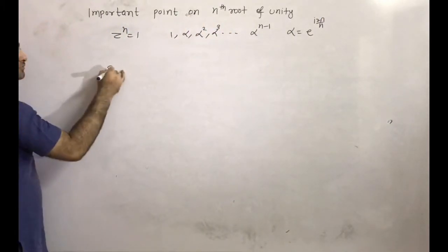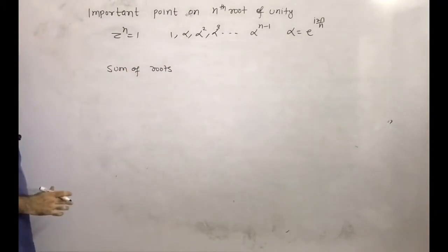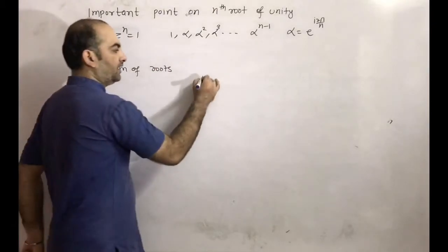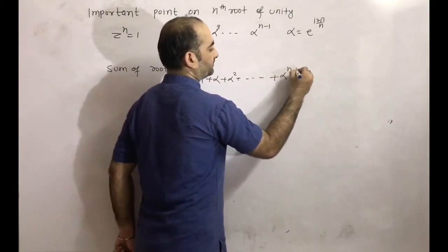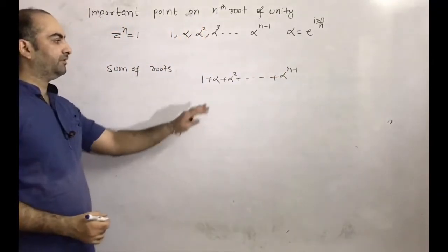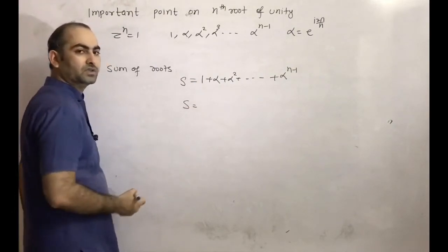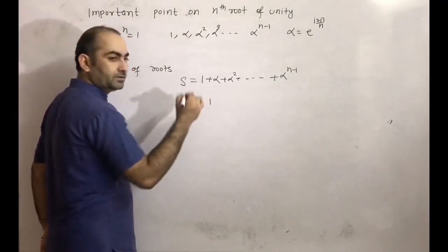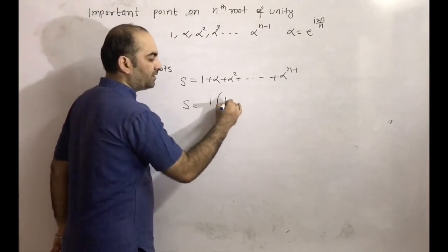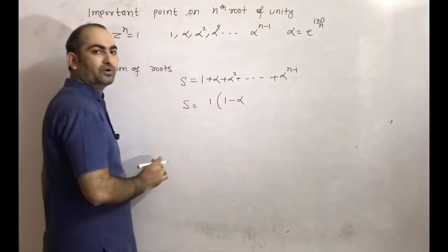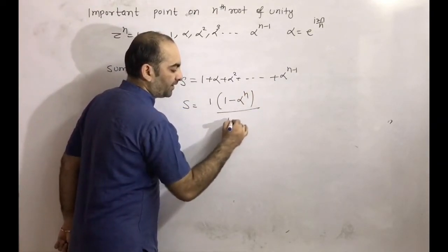Now for finding the sum of roots, we add 1 + alpha + alpha² + ... + alpha^(n-1). So S equals this sum. The first term is 1 and the common ratio is alpha, so using the geometric series formula: S = 1 · (1 - alpha^n) / (1 - alpha), where there are n terms.